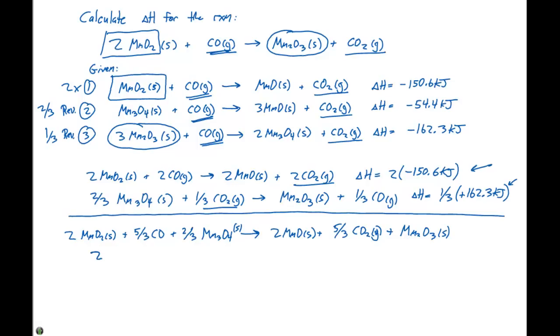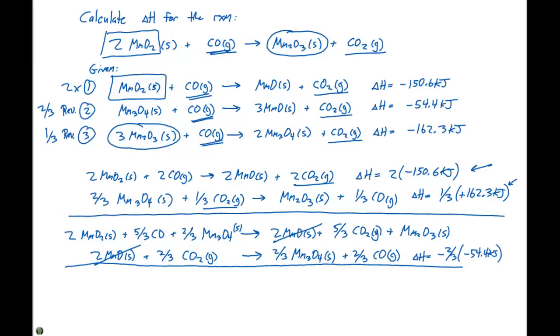When we do that, we get 2MnO as a solid plus two-thirds CO2 as a gas, giving us two-thirds Mn3O4 plus 2CO. This delta H is going to equal negative two-thirds times negative 54.4 kilojoules. When we add these reactions together, we're going to see that the 2MnO solids cancel out on either side. We're also going to be able to get rid of the two-thirds Mn3O4.